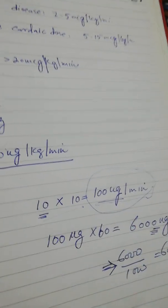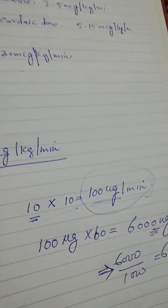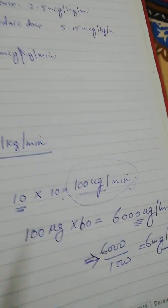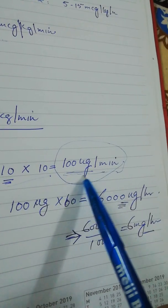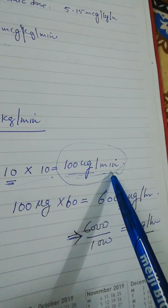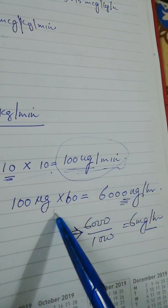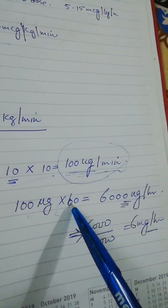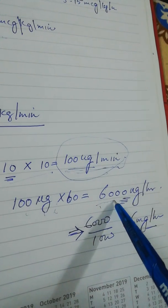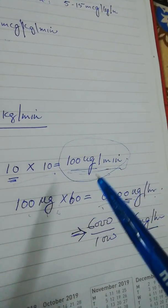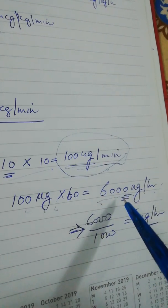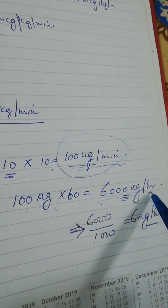Usually in the syringe pumps and the infusion pumps the delivery rate is set in an hour. So 100 microgram per minute, to convert it into per hour we will just multiply it by 60. This will become 6000 microgram per hour.